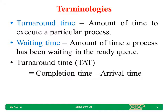Some terminologies we are going to use. One is turnaround time — it is the amount of time to execute a particular process. Another is waiting time — it is the amount of time a process has been waiting in the ready queue. Turnaround time is nothing but completion time minus arrival time of that particular process. These two terms we are going to use in our discussion.